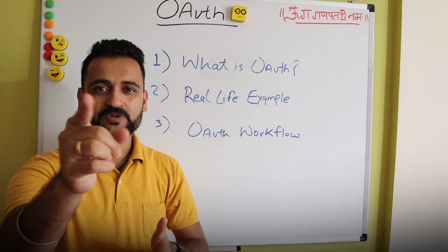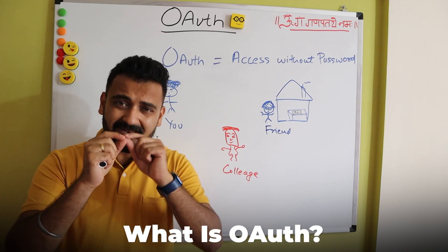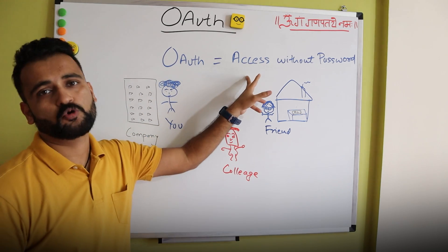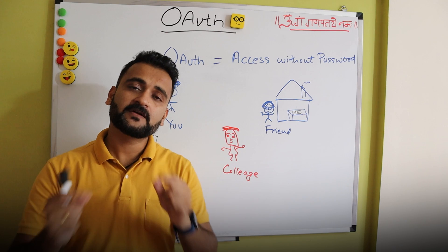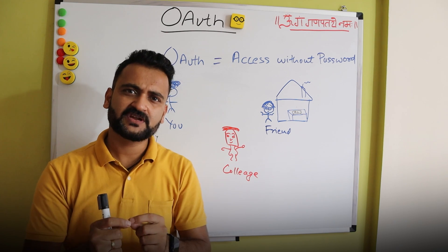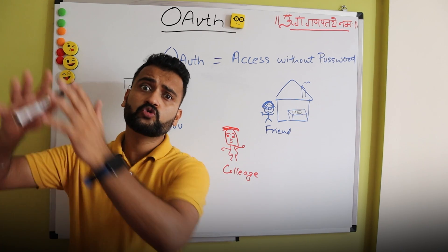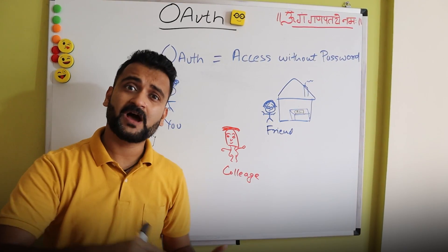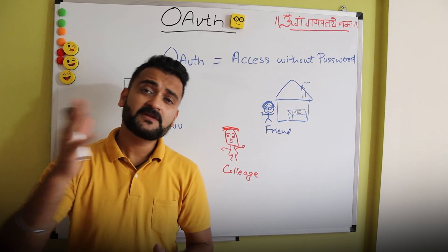So what is OAuth? Well, in very simple terms, OAuth is providing someone access without a password. It is an open standard for authorization which allows any third-party application to go to an authorization provider on your behalf and get your data from there. But to simplify it further, let's take a real-life example.